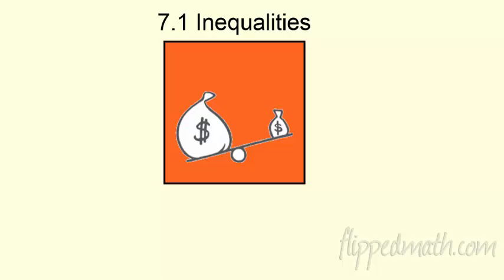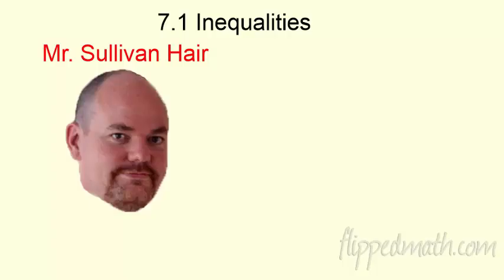So lots of inequalities out there. Here's an inequality right here. These are not balanced money. Some people have more money than other people. So we're looking at things that aren't equal. So you can see that's lopsided. Some people have more money. What else is not equal?